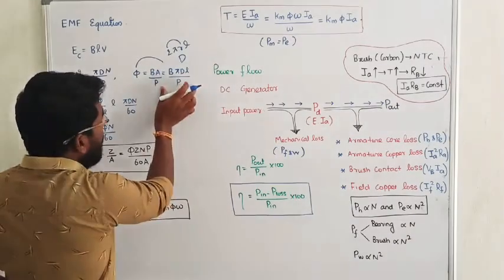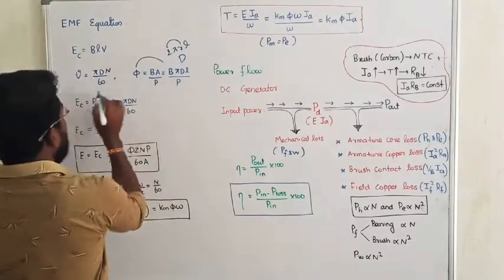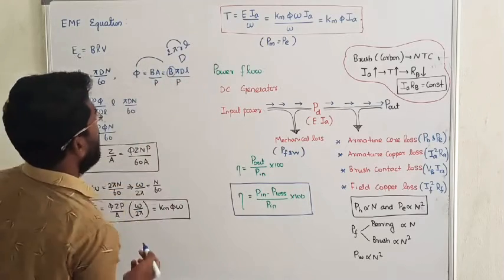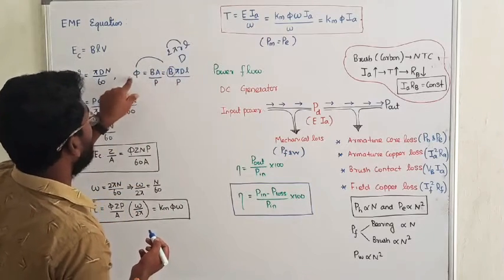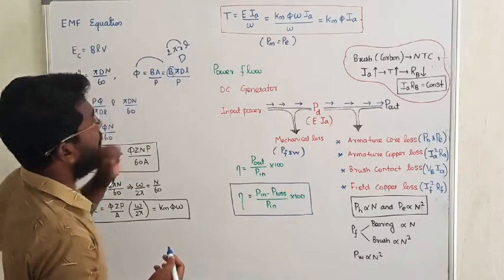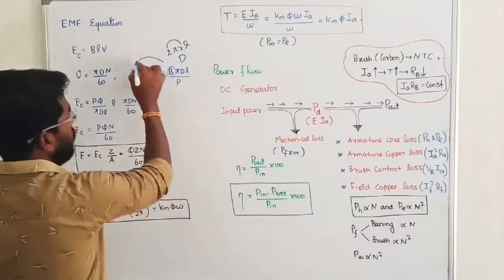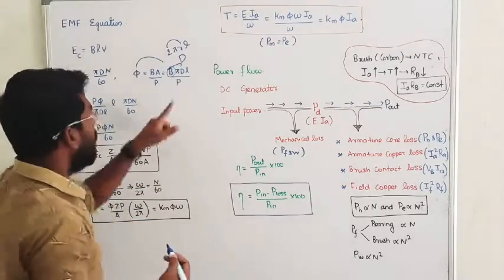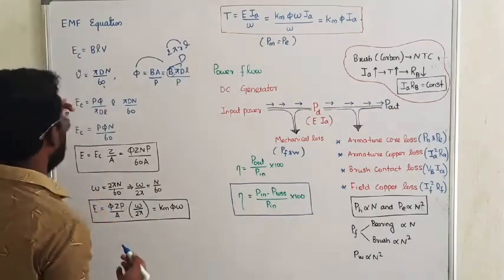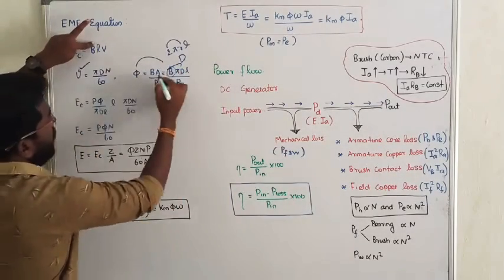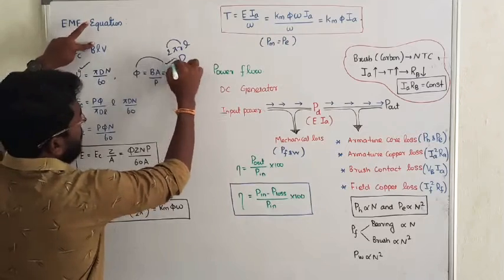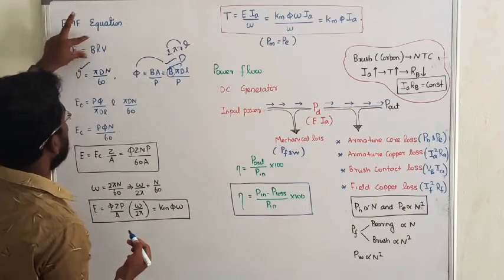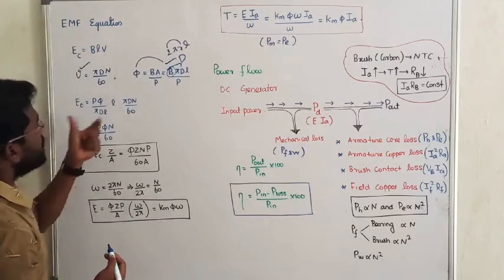Therefore flux per pole φ equals B into πdl divided by P (number of poles). From this we can calculate the magnetic flux density B as B = P·φ divided by πdl. Now that we know both velocity and magnetic flux density, we can substitute these to find the induced EMF per conductor.